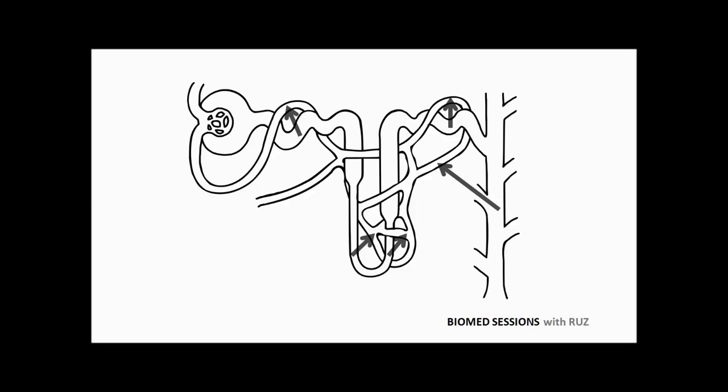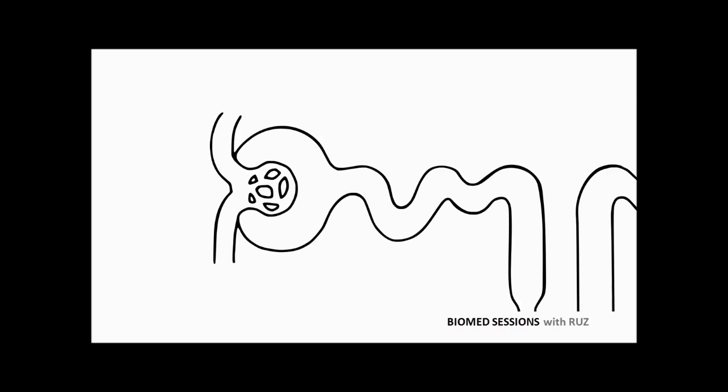Now whilst we're on the topic, we might as well discuss secretion, which occurs in small amounts in the nephron. This is the process whereby substances move from the blood, through the interstitial fluid, into the tubule. To make things simpler, let's remove the surrounding capillaries and zoom in on the first part of the journey where filtration occurs.